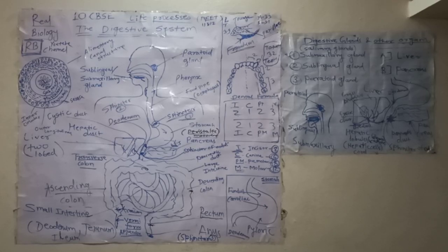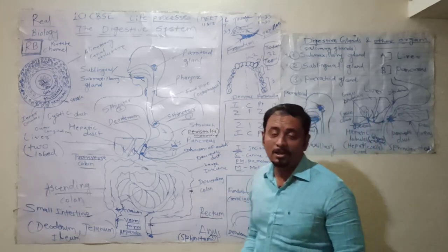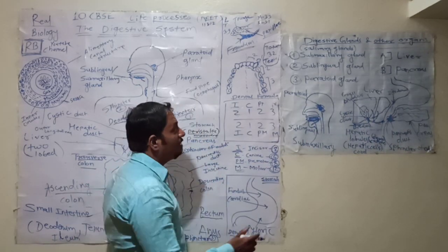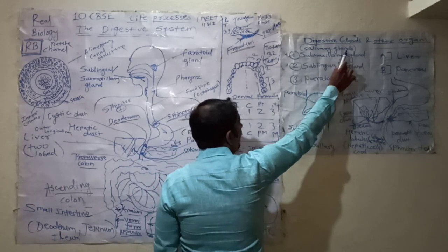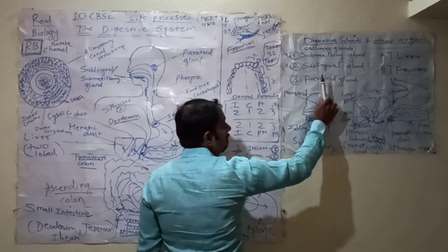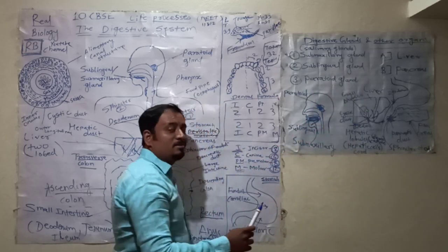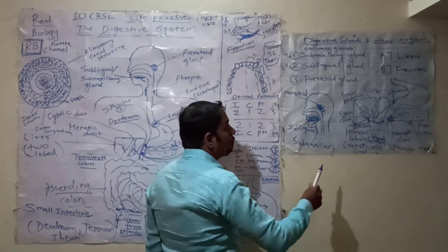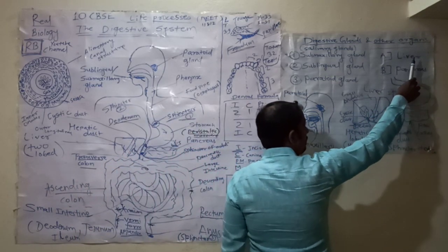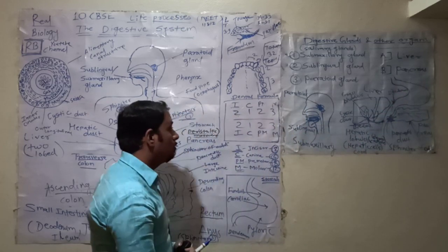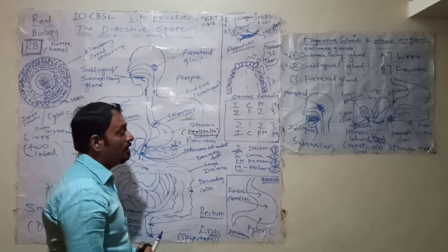The next point is digestive glands and the digestion process. The total digestive glands present are basically three — majorly salivary glands. These three salivary glands are the submaxillary gland, sublingual gland, and parotid gland. The major salivary gland is the parotid gland. Along with these, two other organs are also involved in the digestion process: the liver and pancreas.